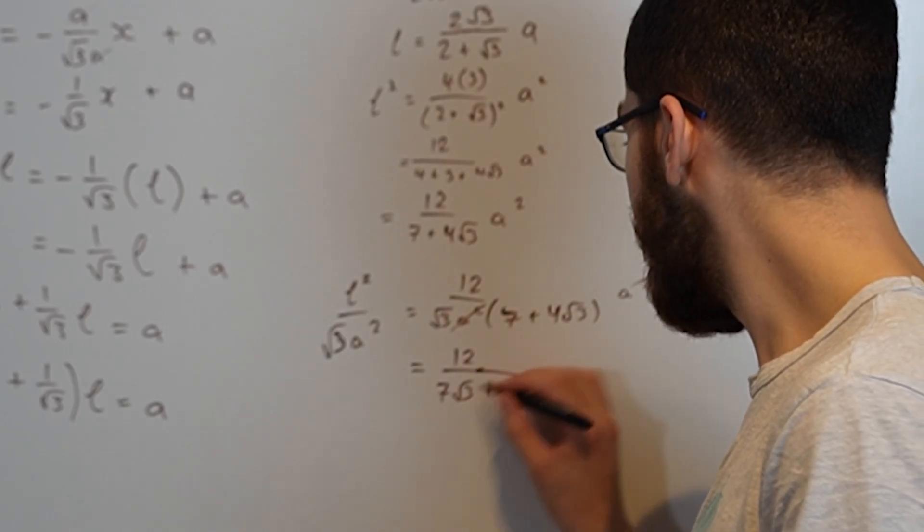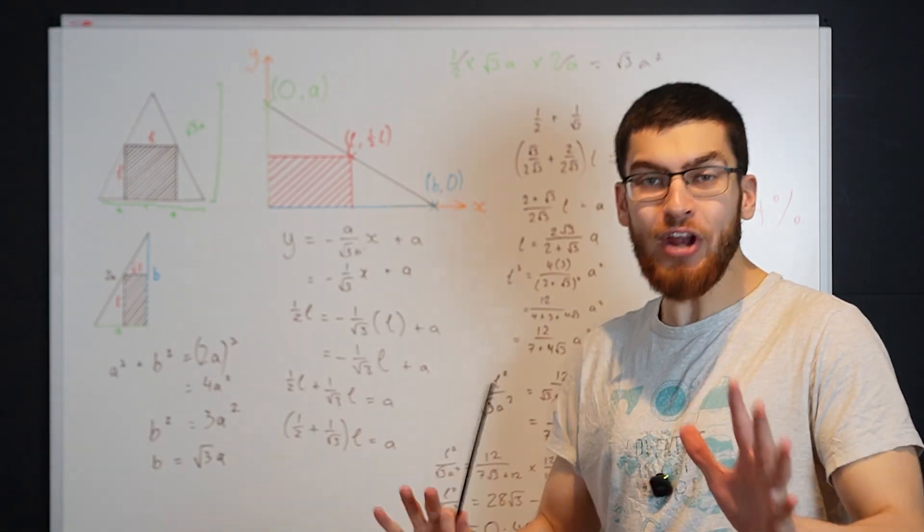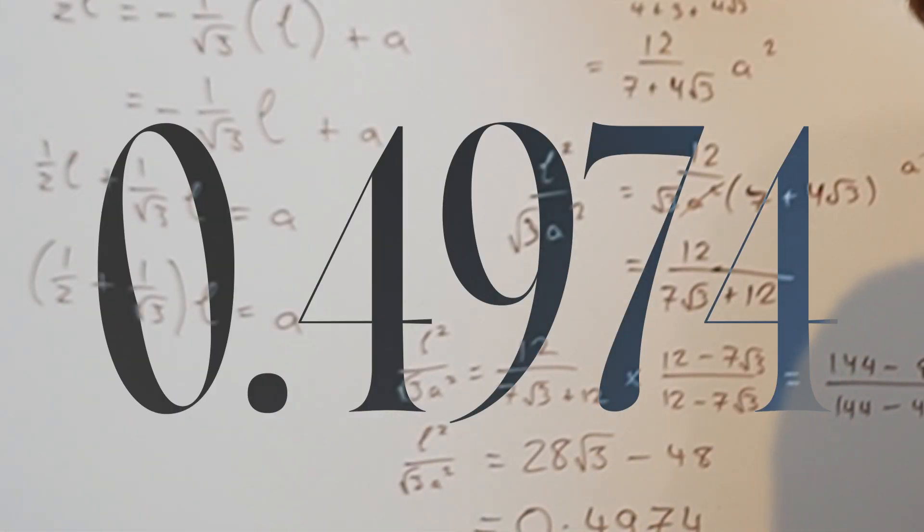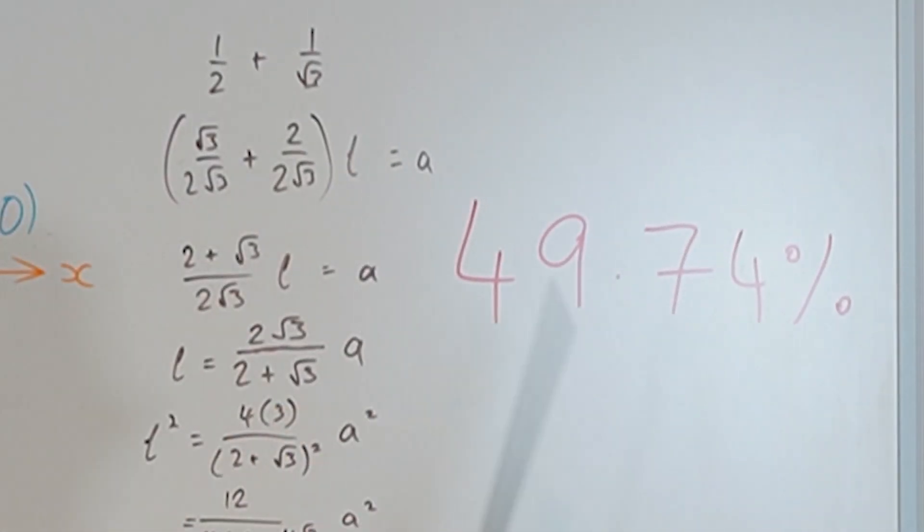Then if we rationalize the denominator, you should end up with 28 root 3 minus 48, which is 0.4974, which is around 49.74%.